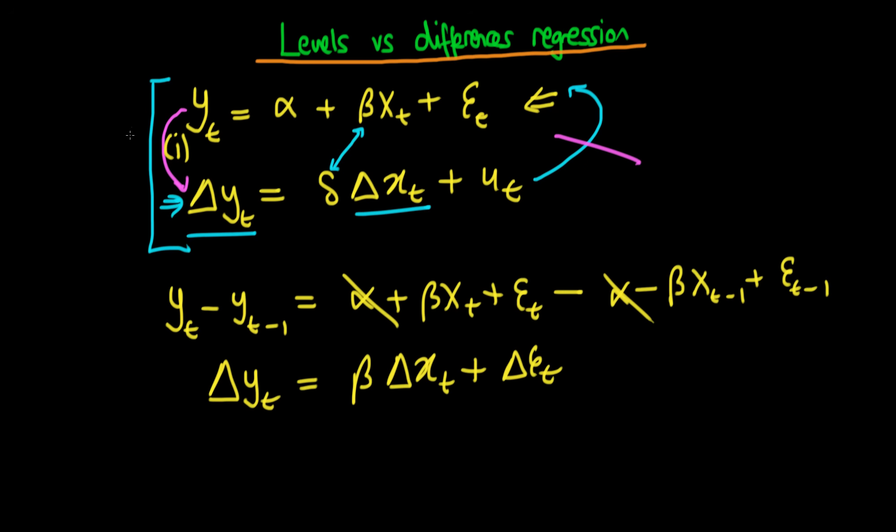But whilst it's the case that we can go from a levels regression to a first differences regression which is stable, it is not necessarily the case that the converse is true.